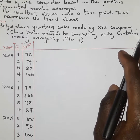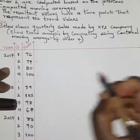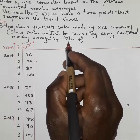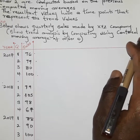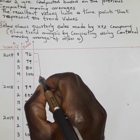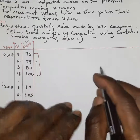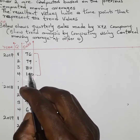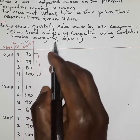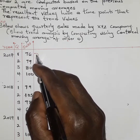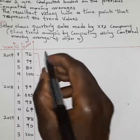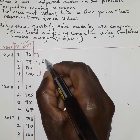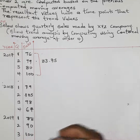We are going to get the average for each set of four successive quarters. Starting with the first four quarters — since we are using order four, we pick any four successive values, add them, and divide by four. We get a value of 83.75. This 83.75 is the trend for the period after the first quarter, so it cannot be placed at the first quarter position.